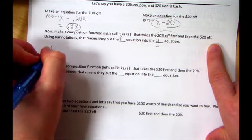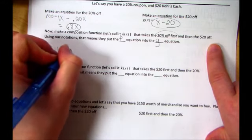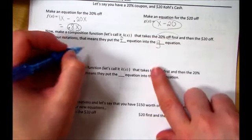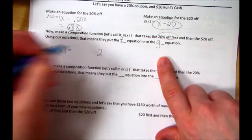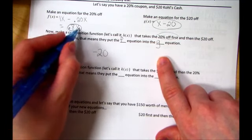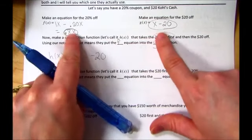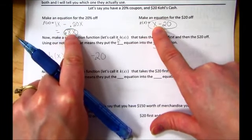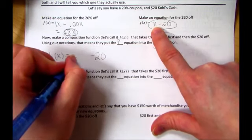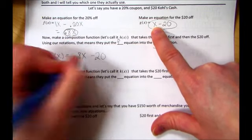So that's going to be H of X equals. We're going to take the G equation, which was X minus 20. But instead of X minus 20, we're going to take this F equation and put it in for this X. So we're going to take this, I'm pointing at it, this 0.8 equation, and plug it in for that X. That doesn't simplify.